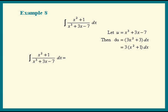Now, we get the integral of 1 over u. And the leftover part, the numerator, x squared plus 1 dx, what's that? It is exactly 1 third of du. So let's put that in. Constant factors can be factored out of integrals. So we get 1 third times the integral of du over u. And there's our formula.